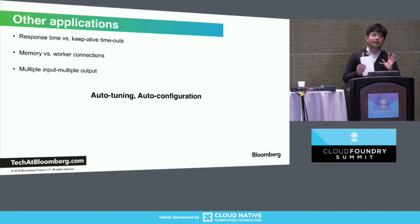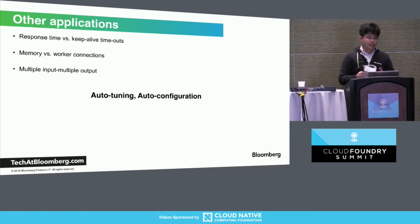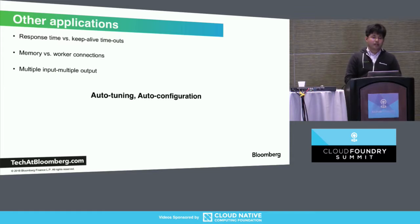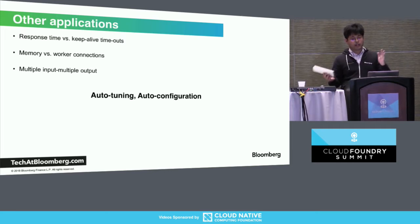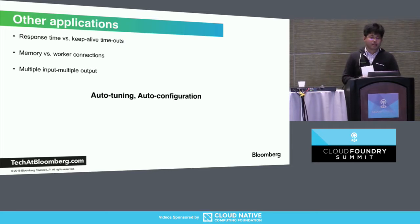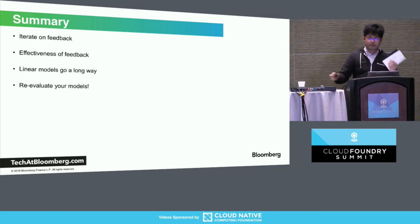Control theory is not only applicable to auto-scalers, but to anything you want auto-tuned and auto-configured. For example, you might want to set your application's keep-alive timeouts in NGINX and see how it affects response time, number of connections, and memory on your machine. The nice thing about linear models is you can combine these variables — instead of just a line showing one input and one output, you can do multiple inputs and multiple outputs, giving you a plane or an n-dimensional linear model. You can start at a small scale.